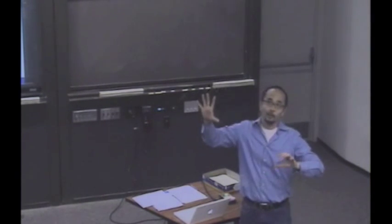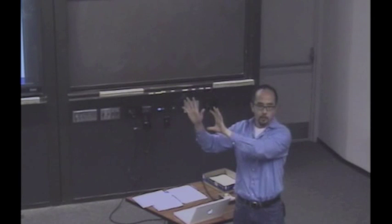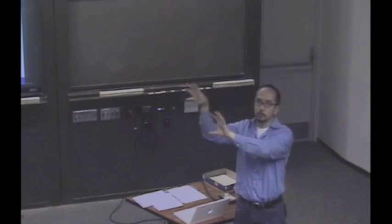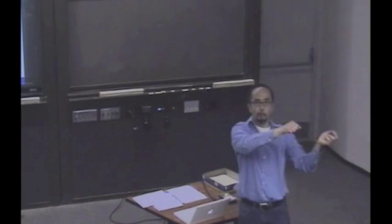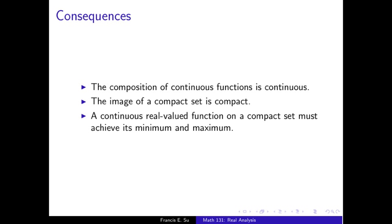The image of a compact set is compact. You've got a compact set here and another space here, and you're mapping it in. Well, let's cover, take an open cover of the image here. The pre-images form an open cover here. Therefore, there's a finite subcover using only those sets. Therefore, their forward images also cover the set, and they're finite. Very nice.